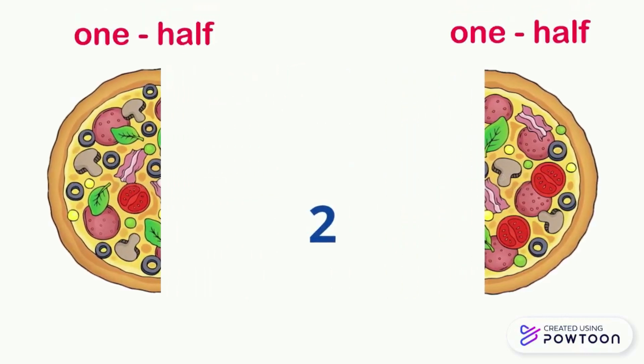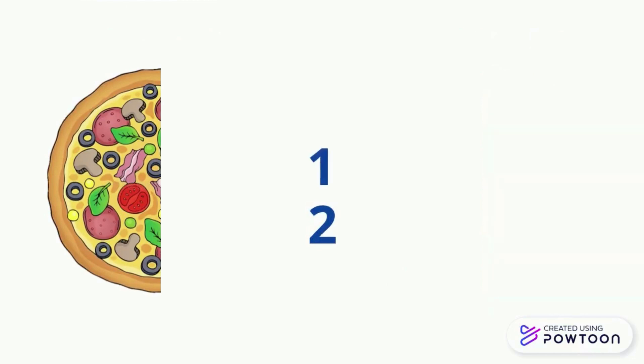Each part represents one half of this pizza. If we take one part of these two equal parts, then we can write it like this, 1 over 2, and we read it one half.